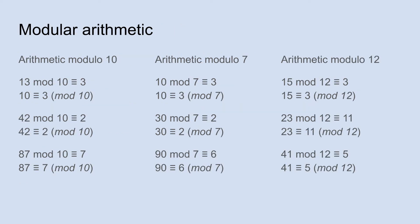Now modular arithmetic is almost like the opposite of integer division. Instead of ignoring the remainder, we only care about the remainder. So if you're doing arithmetic modulo 10, basically that is asking the question, what is the remainder when you divide by 10? So 13 divided by 10 is 1 remainder 3, and so 13 mod 10 is 3.